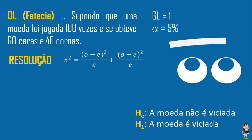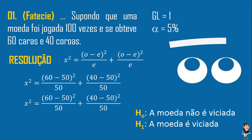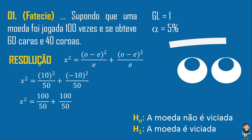Aqui temos a somatória do Q². De tal maneira que eu tenho: 60 caras menos 50 do esperado, elevado ao quadrado, dividido por 50 — que é o esperado — mais 40 coroas menos 50, que era o esperado de coroa, elevado ao quadrado, dividido pelo esperado, que é 50. Na conta: 10² dividido por 50, mais (-10)² dividido por 50. 10² é 100, dividido por 50 é 2. O segundo termo também dá 2. Então a resposta é 4.